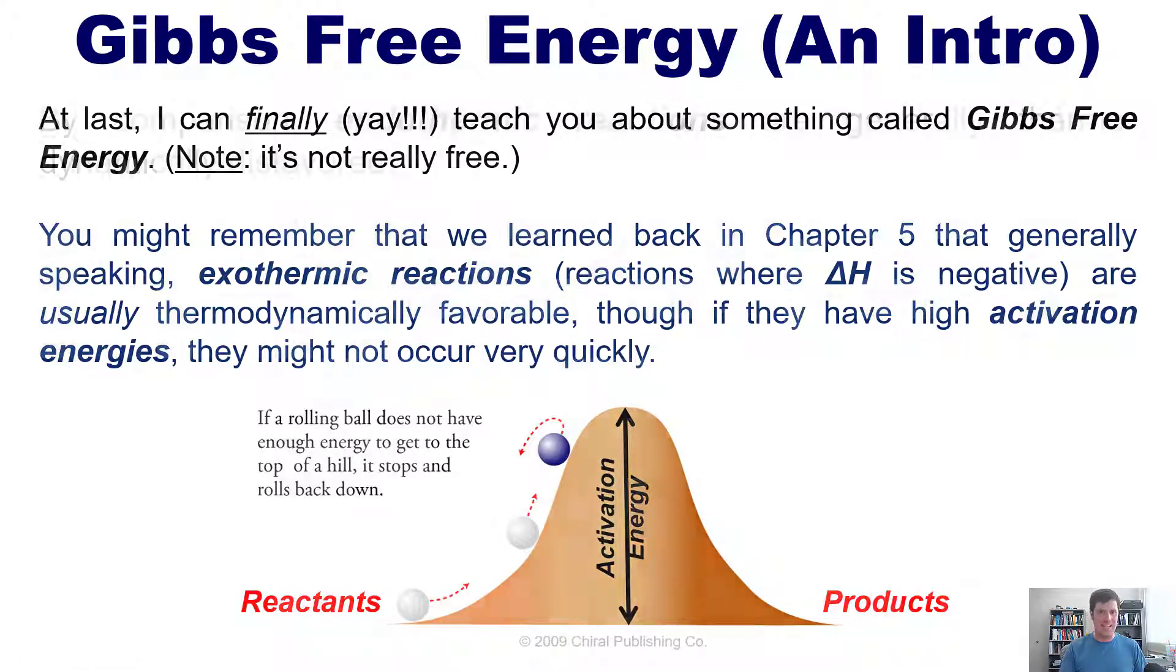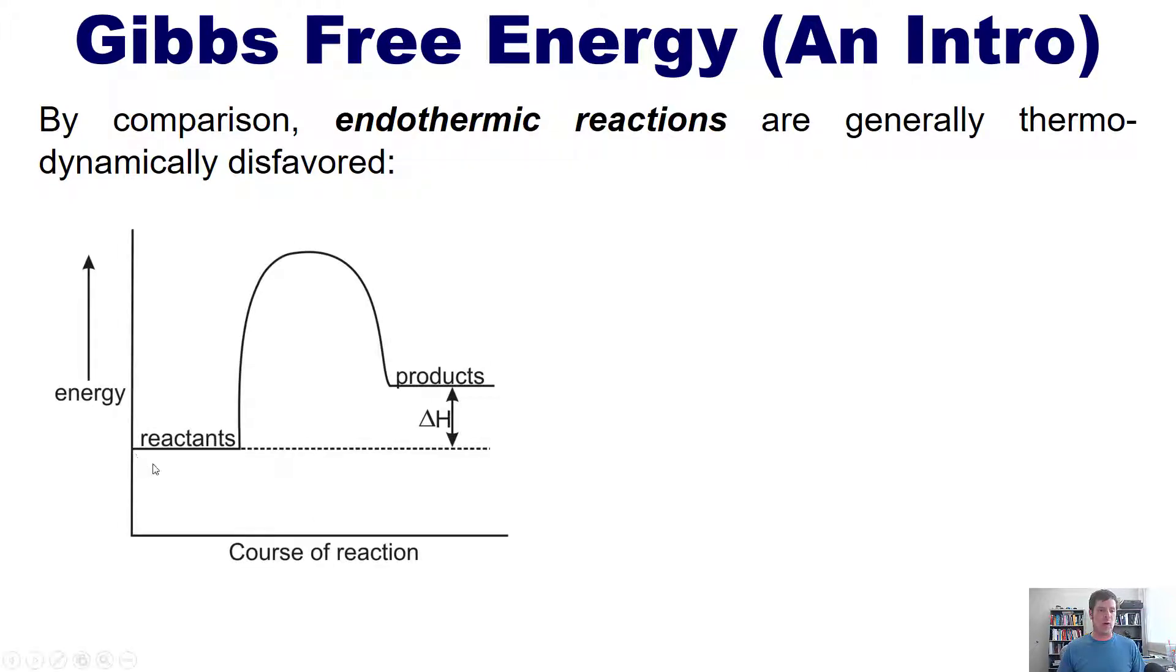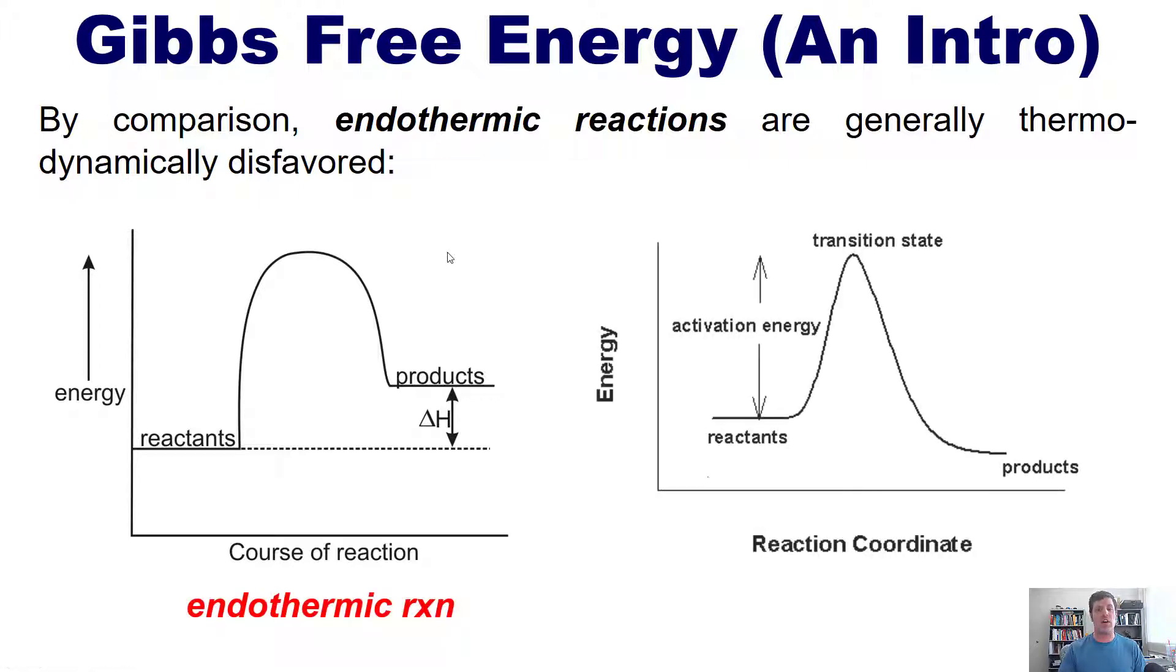Now by comparison, endothermic reactions are generally thermodynamically disfavored. A quick way to identify a reaction as being exothermic or endothermic is if you are given the energy coordinate diagram. If the reactants are at a lower level than the products, then your reaction is endothermic. If the reactants are at a higher level than the products, then your reaction is exothermic.